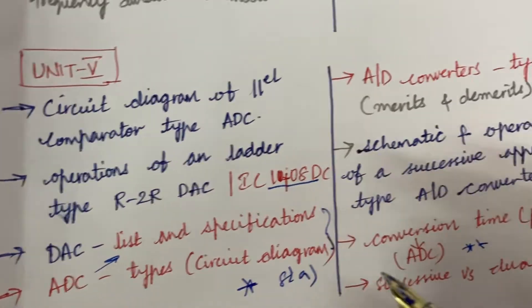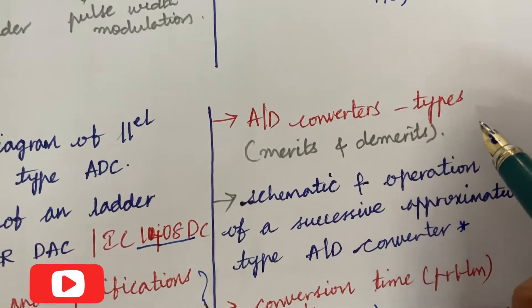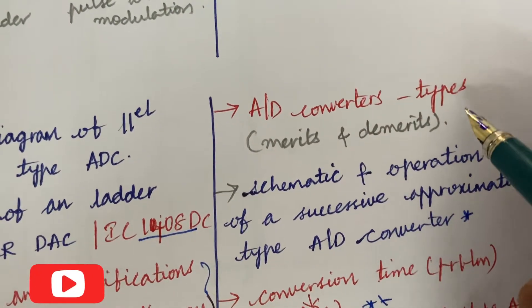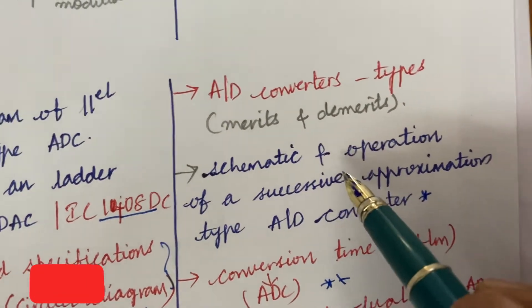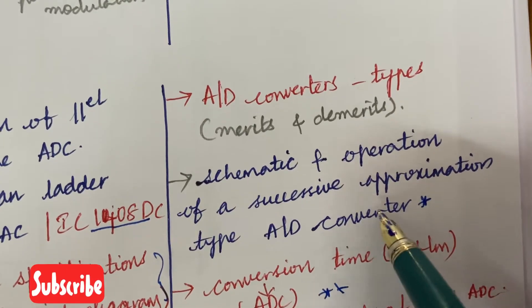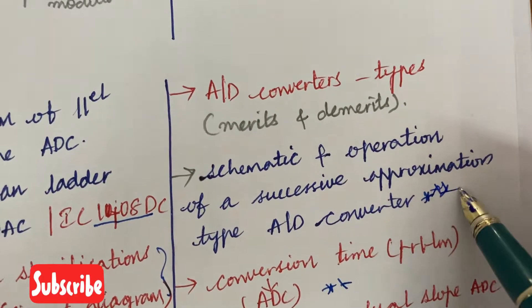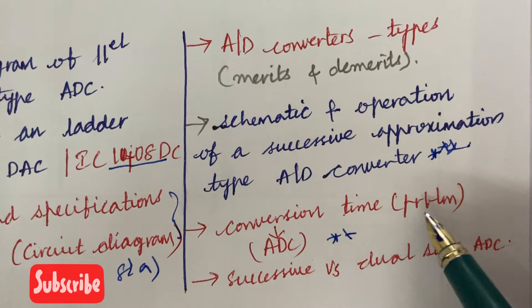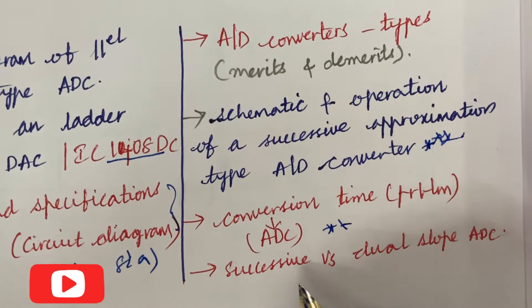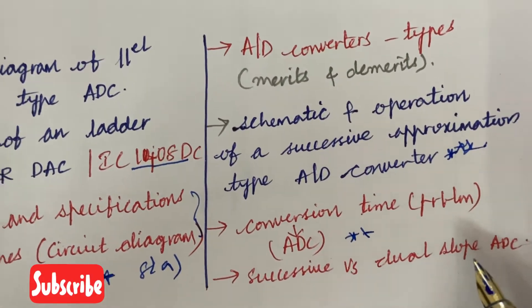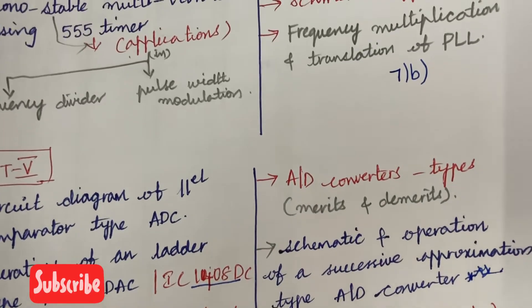From this part you are going to get 8A as well as A to D converters and the types and merits and demerits of it as well as the schematic and operation of the successive approximation type A to D converter is said to be one of the gunshot questions. And the conversion type problems related to ADC and the difference between successive versus dual slope ADC. These all are the list of gunshot questions which I have highlighted for you.